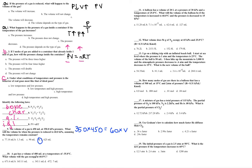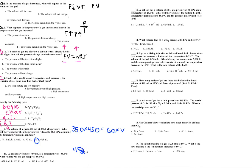A gas has a volume of 480 mL at a temperature of -35°C. What volume will it occupy at 60°C? We're only comparing volume and temperature, so this is Charles' Law. I need to be in Kelvin — I can't use Celsius or I'll get the wrong answer. So -35 + 273 = 238 K for the initial temperature. To convert from Celsius to Kelvin, you add 273.